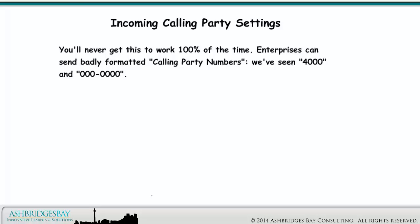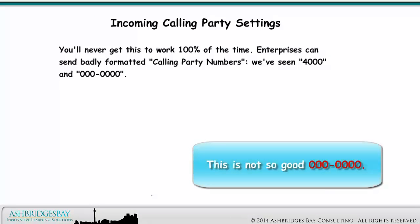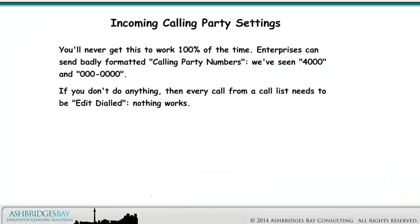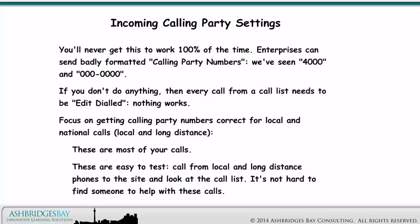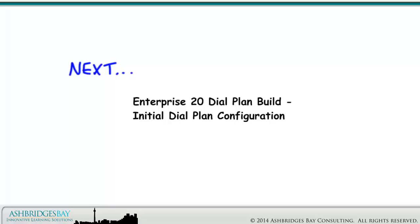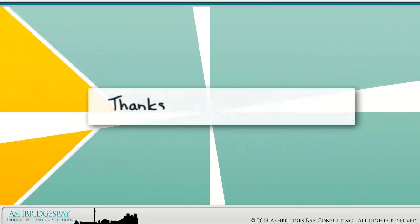You'll never get this to work 100% of the time — enterprises can send badly formatted calling party numbers. We've seen numbers like 4000 and 000000. If you don't do anything, every call from a call list needs to be edit dialed. Focus on getting calling party numbers correct for local and national calls — these are most of your calls and they're easy to test. Call from local and long distance phones to the site and look at the call list. Coming up next: Enterprise 20 Dial Plan Build, Initial Dial Plan Configuration. Thanks for watching.